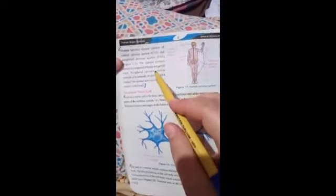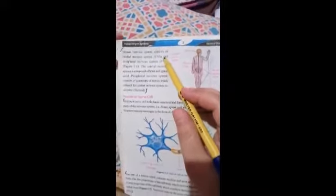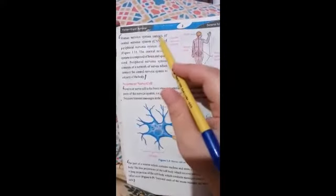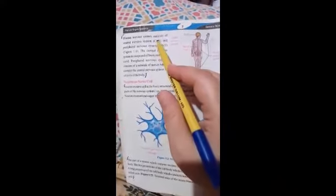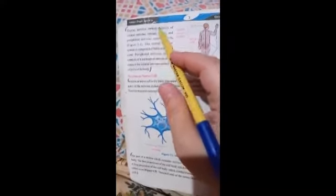And there is also a short question of this portion: what are the parts of the nervous system? These are the parts of the nervous system: central nervous system and peripheral nervous system. Clear?